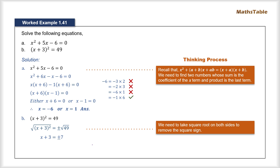We now have two separate equations: one with +7 and one with −7. Solving both by subtracting 3 on both sides of each equation, we get 7 − 3 = 4 and −7 − 3 = −10. So the two solutions are x = 4 and x = −10. This is how we solve this kind of equation — either by factorizing it, or if it is written in square form, by taking the square root on both sides.